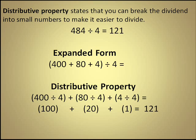Now that we have our three partial quotients, we can sum them up. 100 plus 20 plus 1 equals 121. So we know that 484 divided by 4 equals 121. Each video game costs $121.